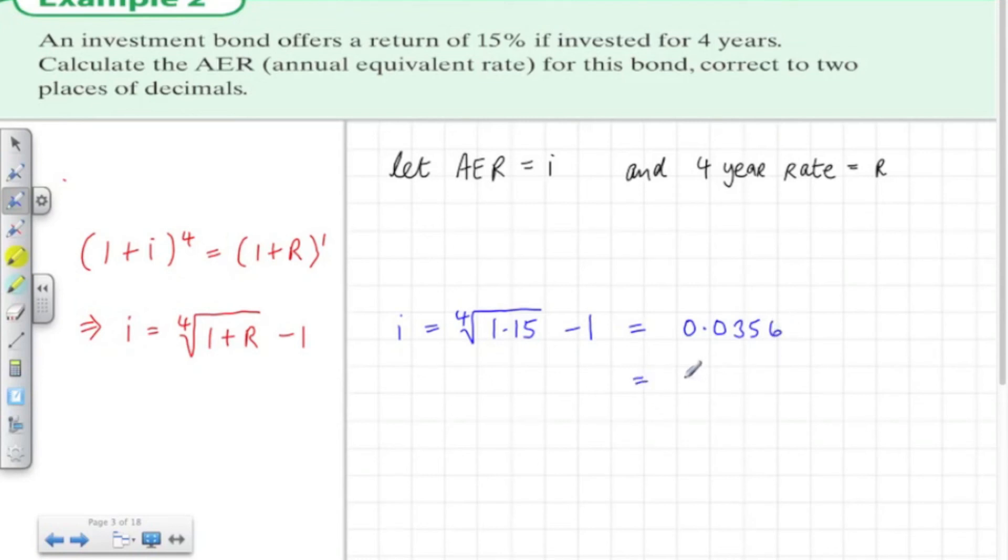Now we go to four decimal places as always. If you want to change this to a percentage, this is the same as 3.56%.